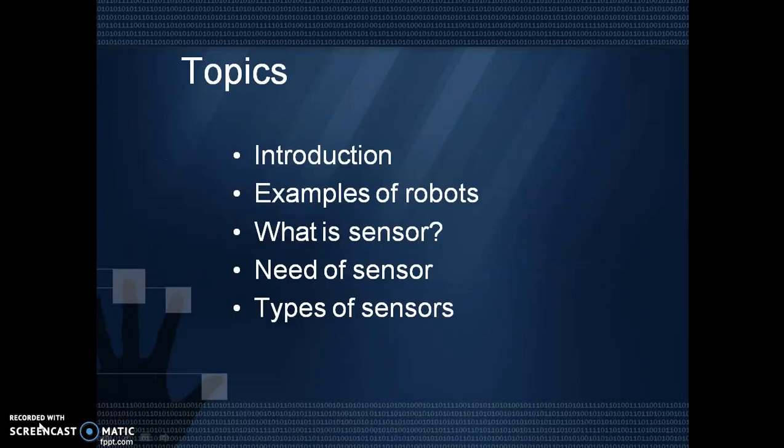So these are the topics. First one is introduction, where I am explaining what is a robot and what are the components of robots. Then next one is examples of robots, where I am giving some examples of robots and we find out which sensors are used in that. Then next one is what is a sensor, then need of sensors, and last topic is types of sensors.